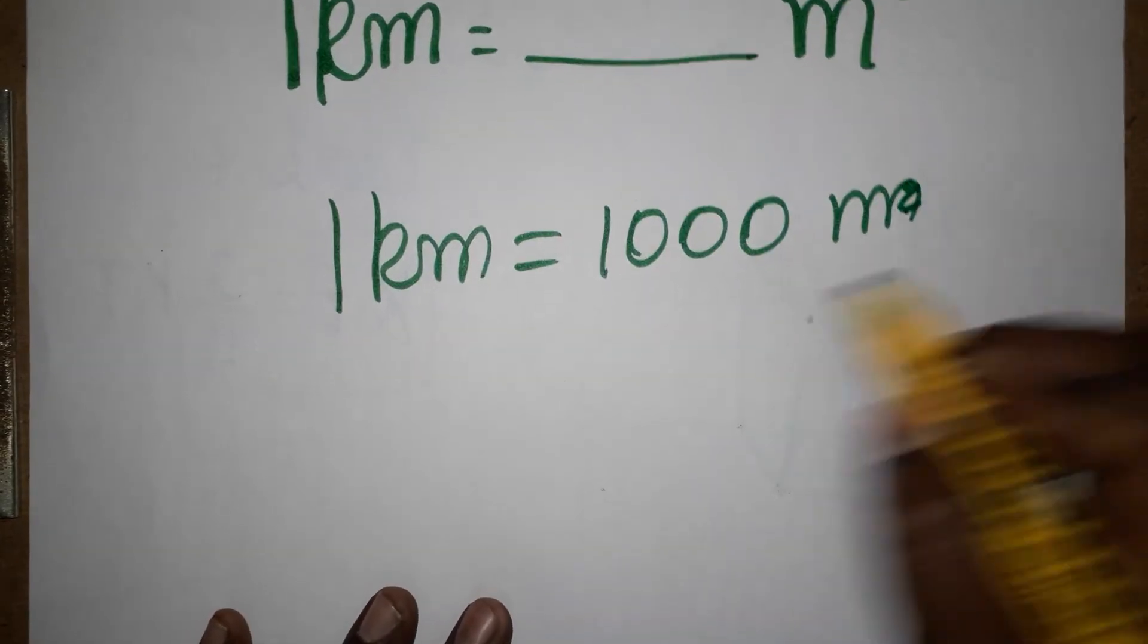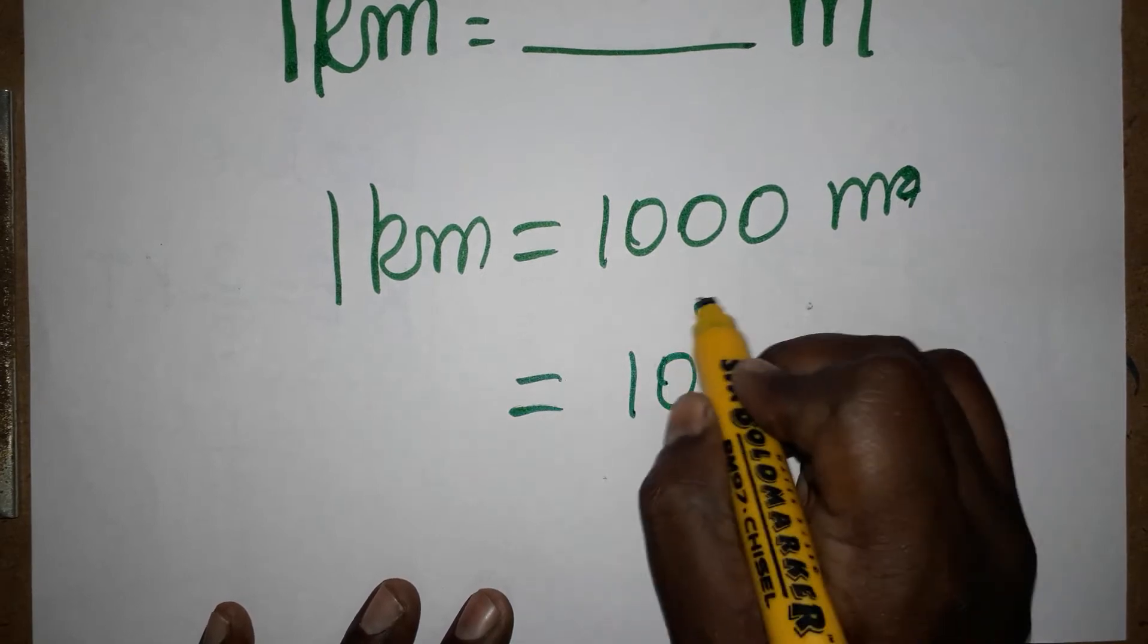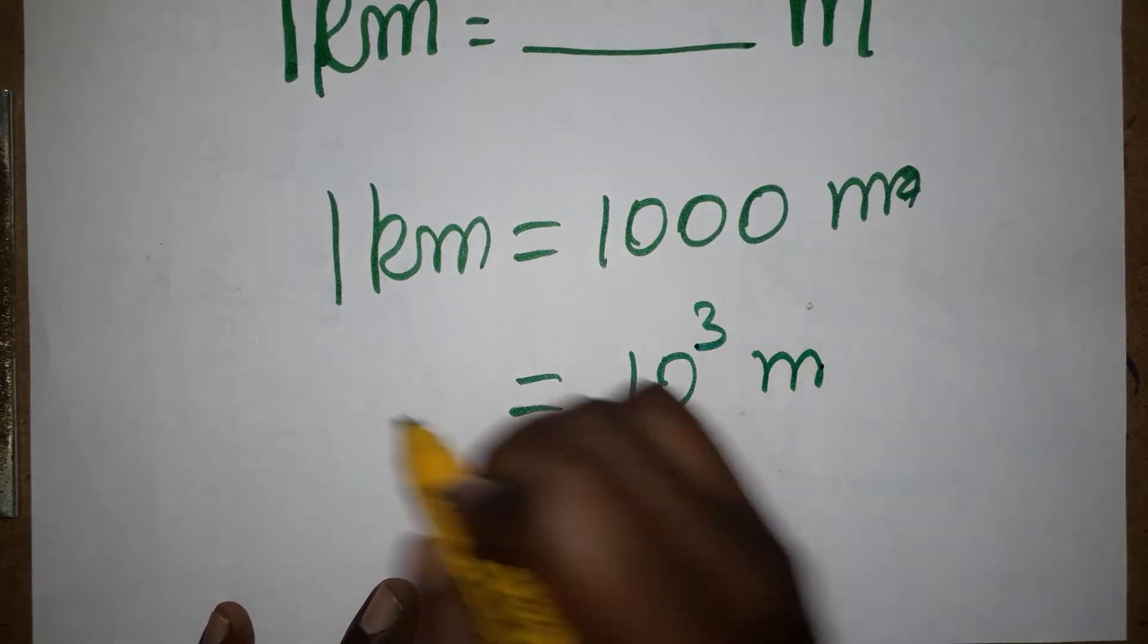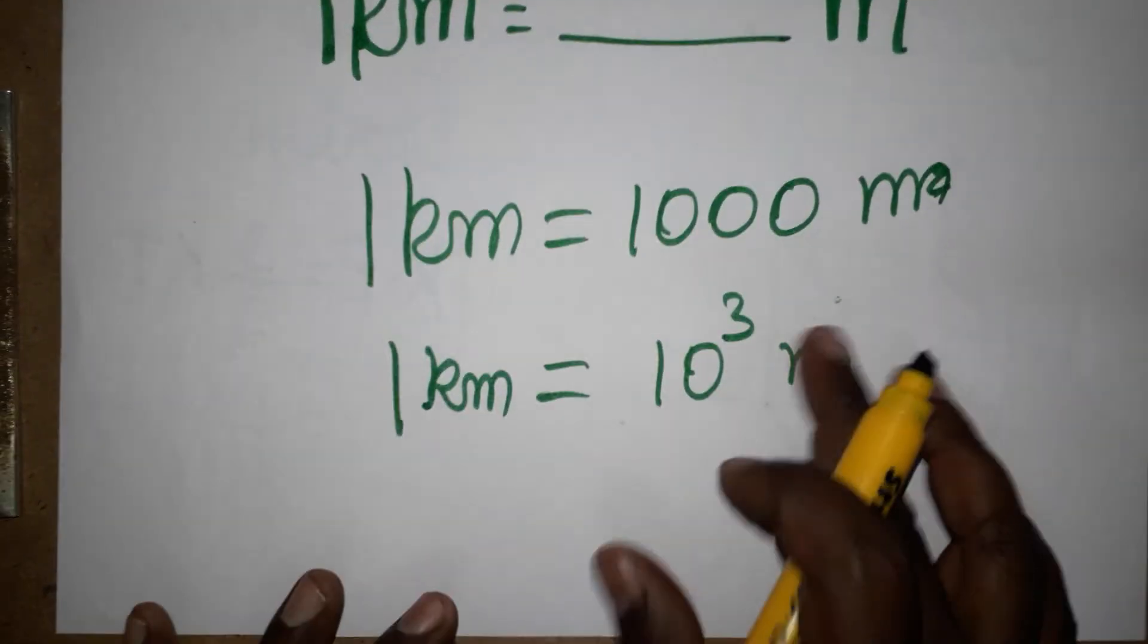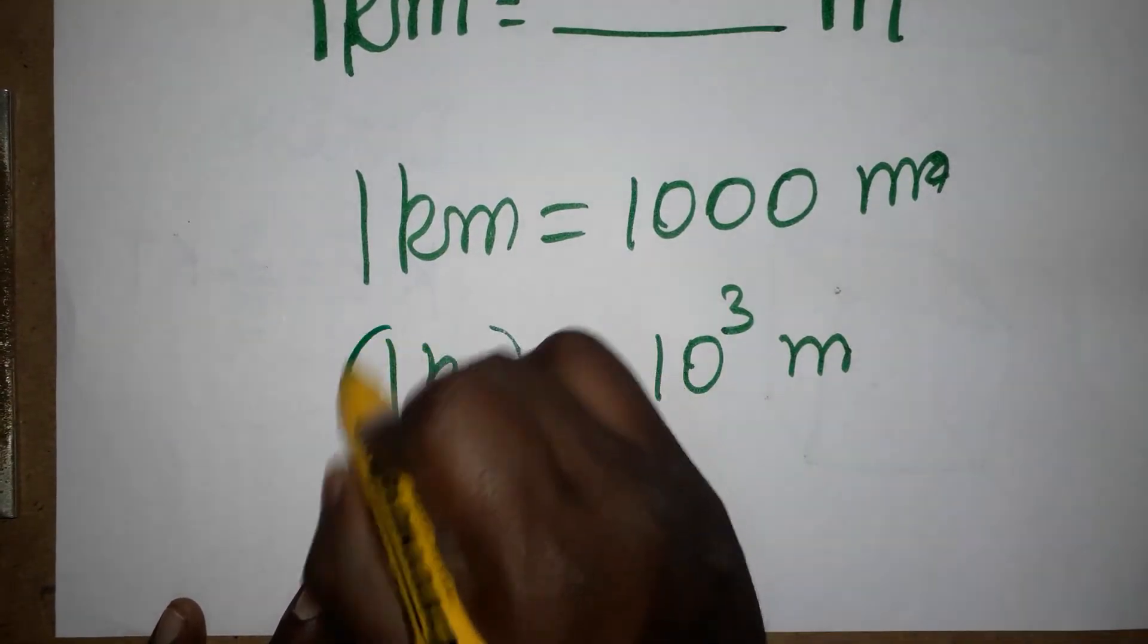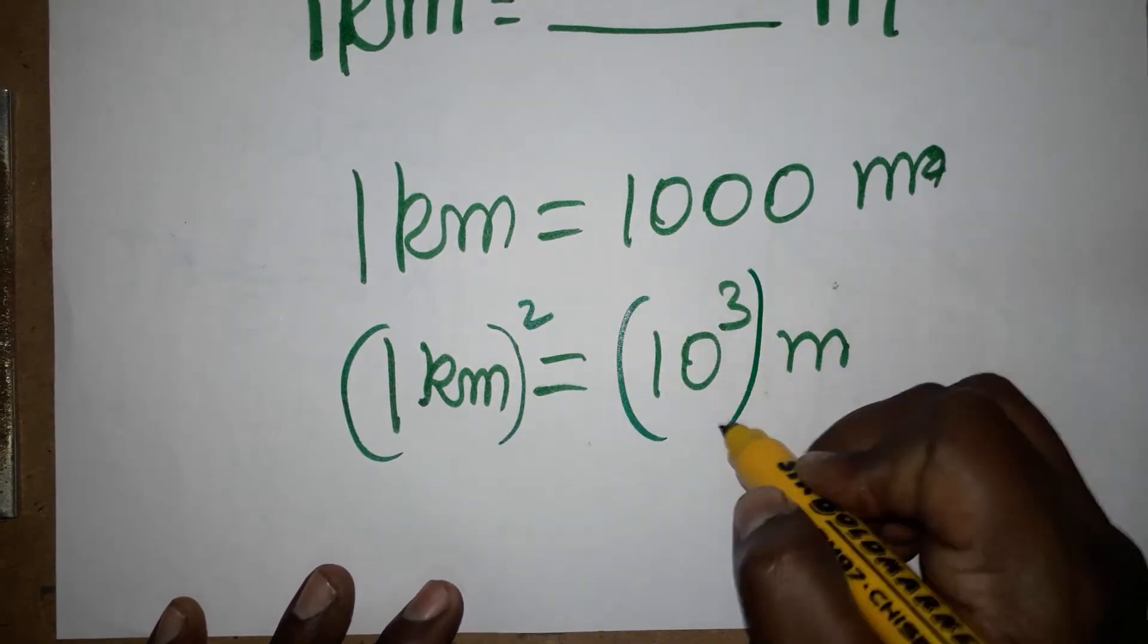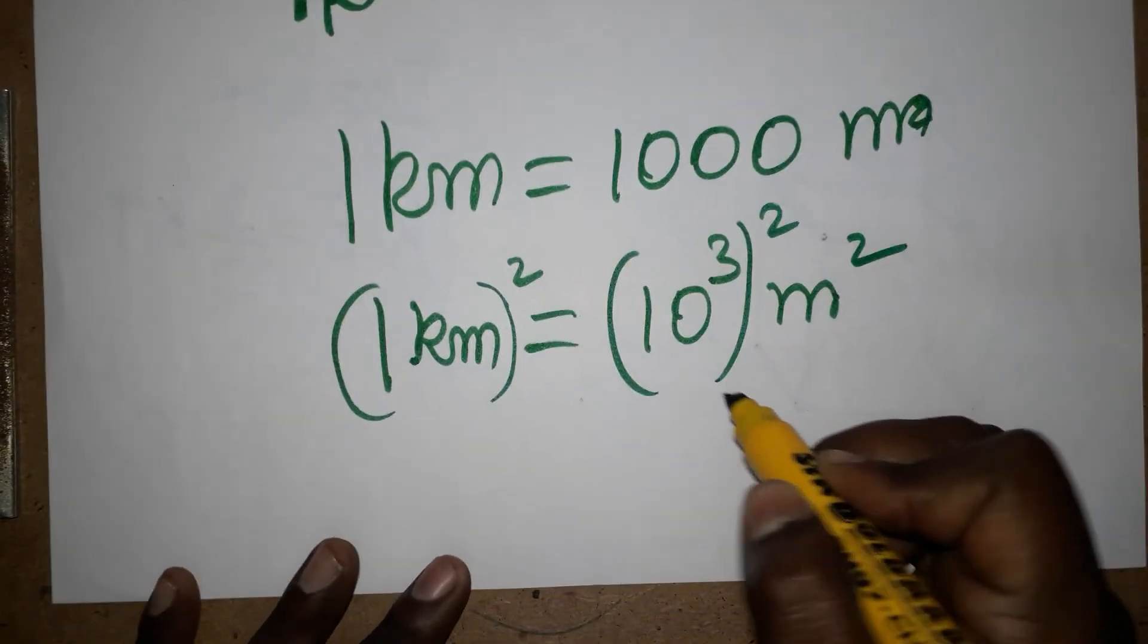We can write it is 10 power 3, 10 power 3 meter. So one kilometer is thousand meter. Our question is kilometer square is dash meter square. So squaring of this, squaring of this, squaring of this. So when we are squaring this,